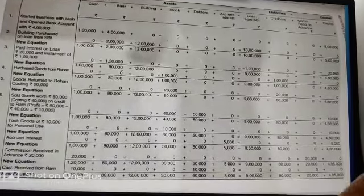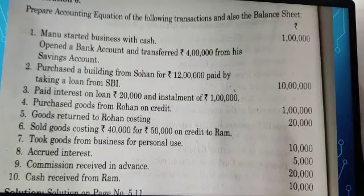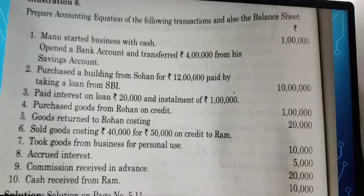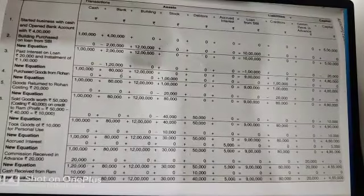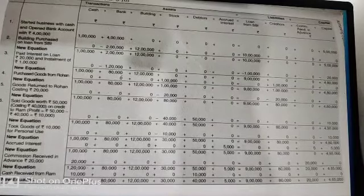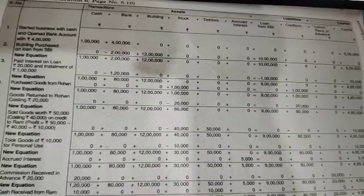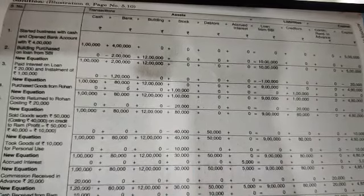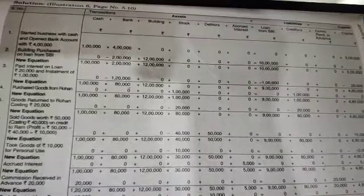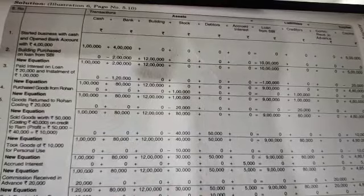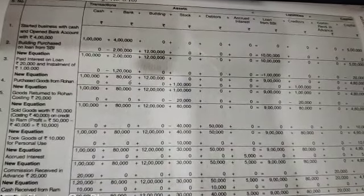Transaction two: purchased building from someone for rupees 12 lakh, paid by taking a loan of rupees 10 lakh from SBI. Loan from SBI is recorded under your liabilities section at rupees 10 lakh. Since building costs rupees 12 lakh but the loan is only rupees 10 lakh, the remaining rupees 2 lakh is presumed to have been paid from the bank, reducing your bank balance by rupees 2 lakh.